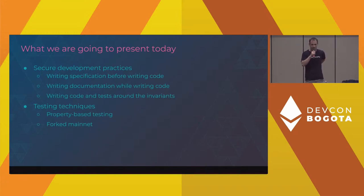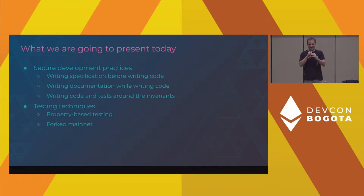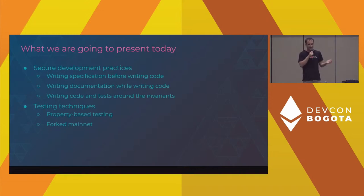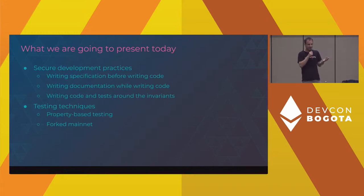What we're going to focus on in the workshop today is testing your project. Unfortunately, as auditors we've often seen that projects are not really tested, and testing covers a lot of things — so sometimes we need to guide our clients and point them to resources on how to efficiently and meaningfully test a project. This will include unit tests, property-based testing, and forked mainnet tests. At the very end we'll talk about further things you should consider to get your code into an audit-ready state, and even after the audit is completed and you deploy to mainnet.